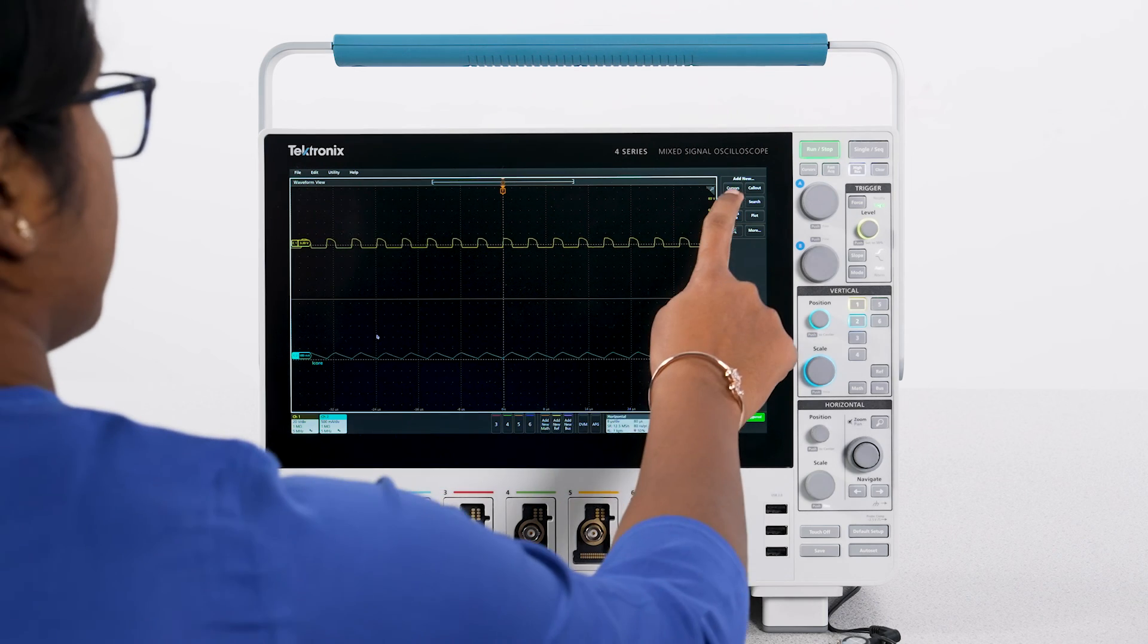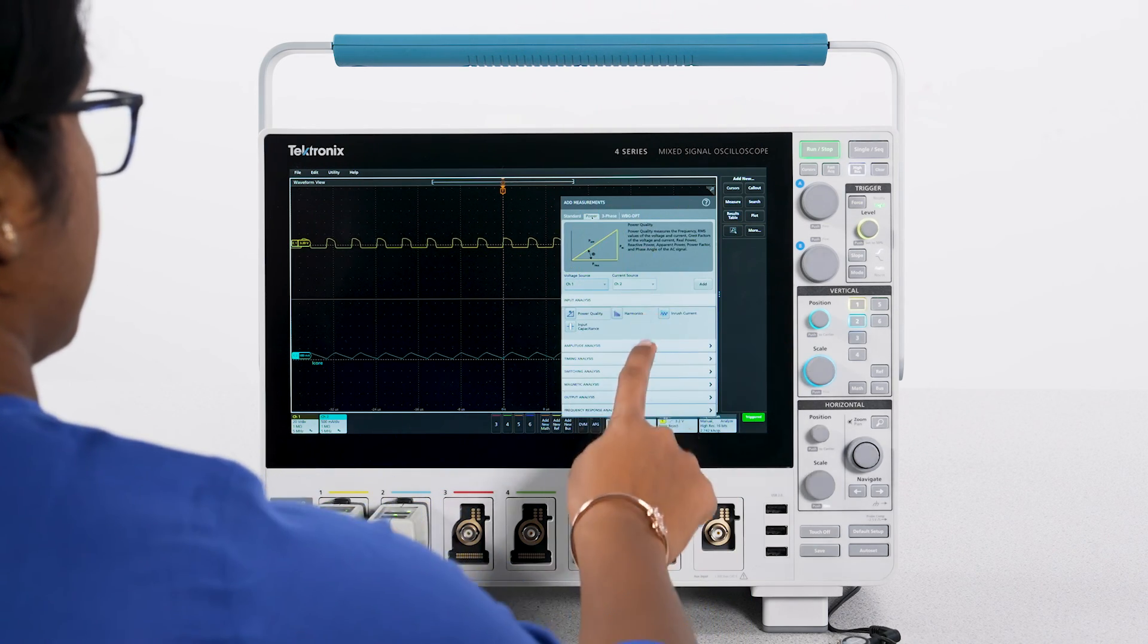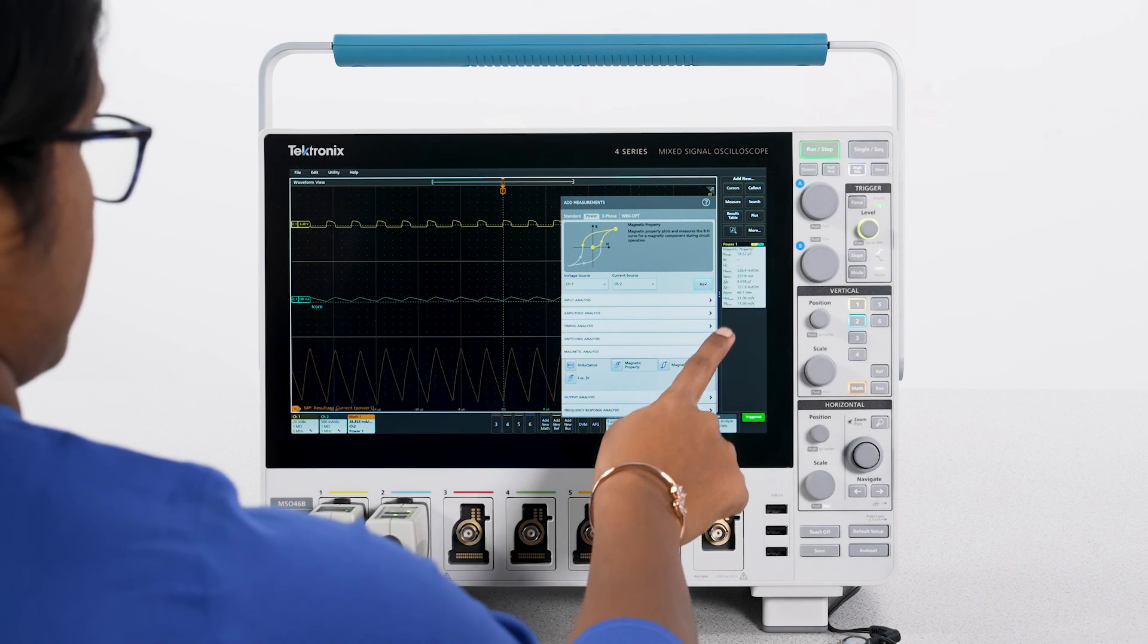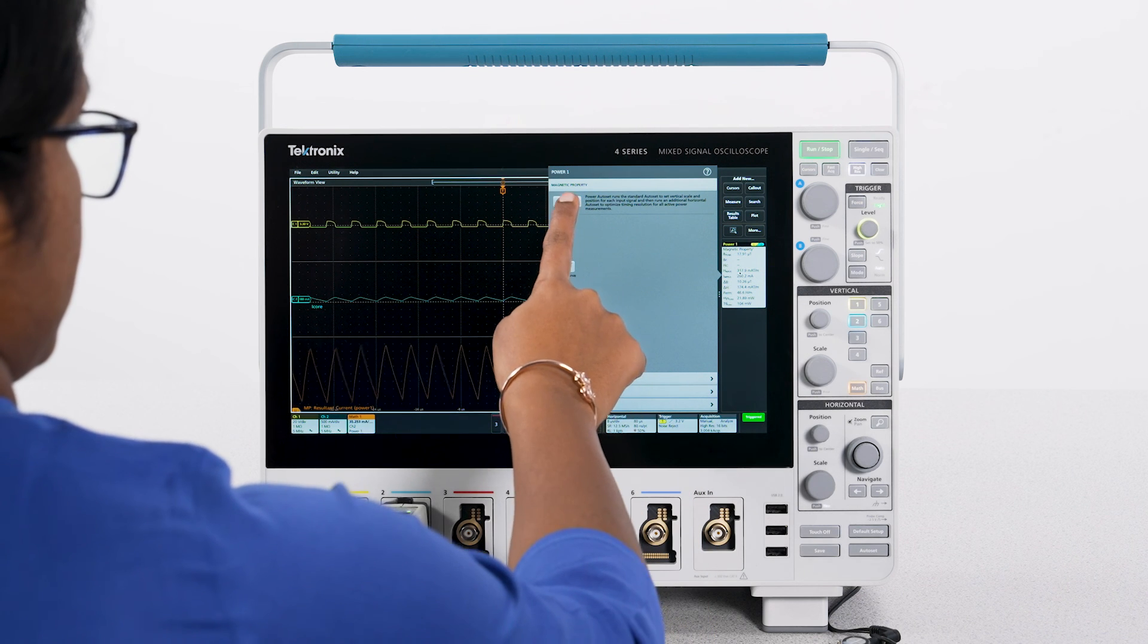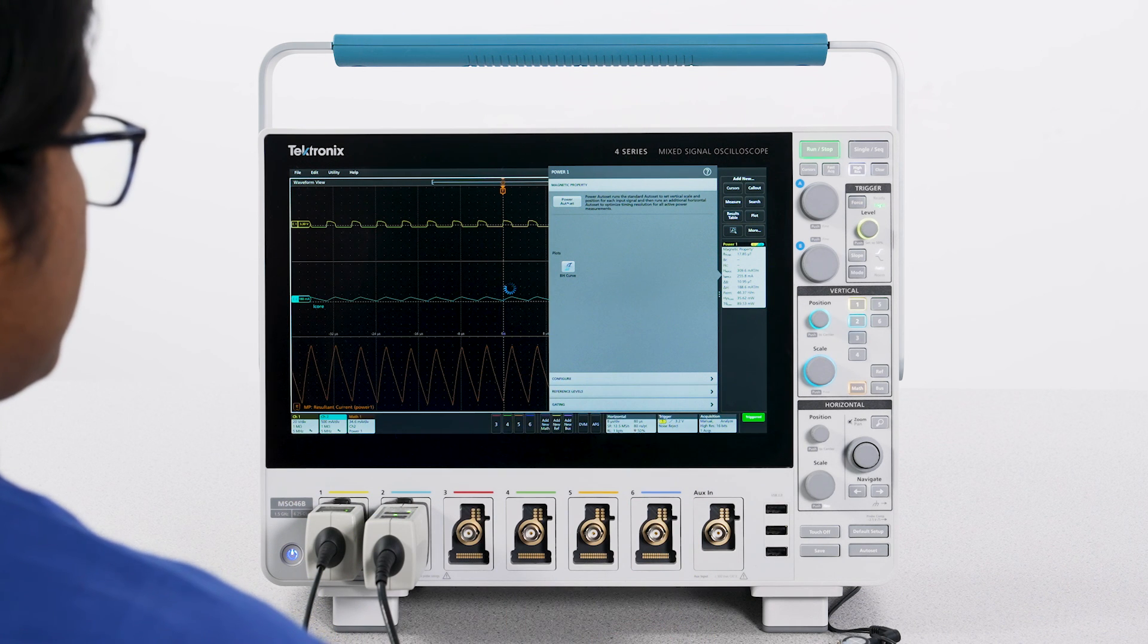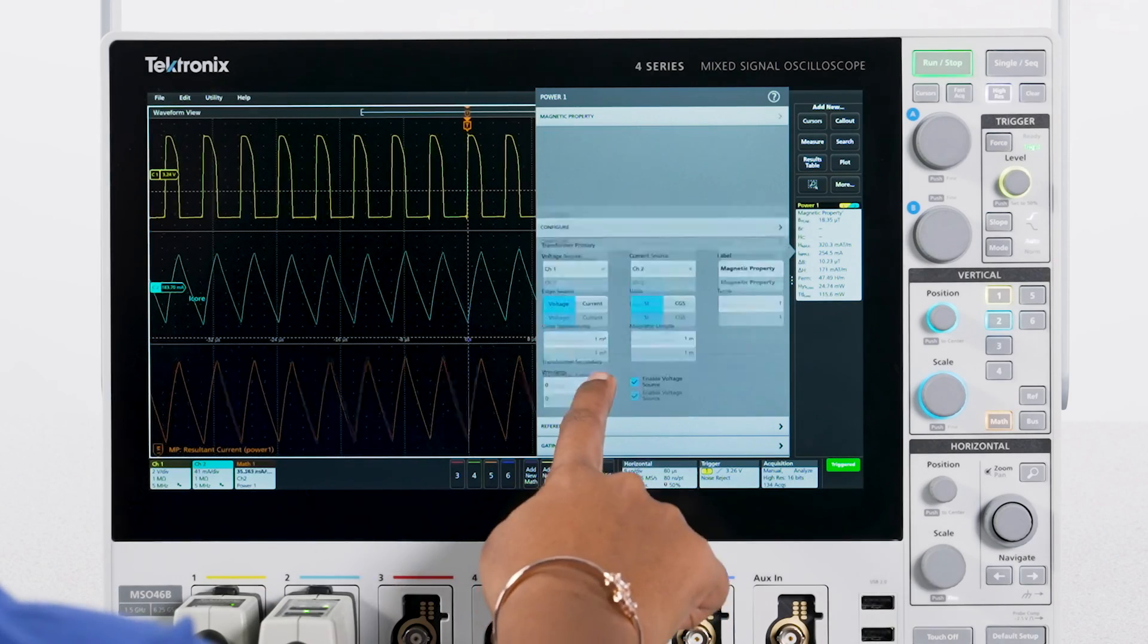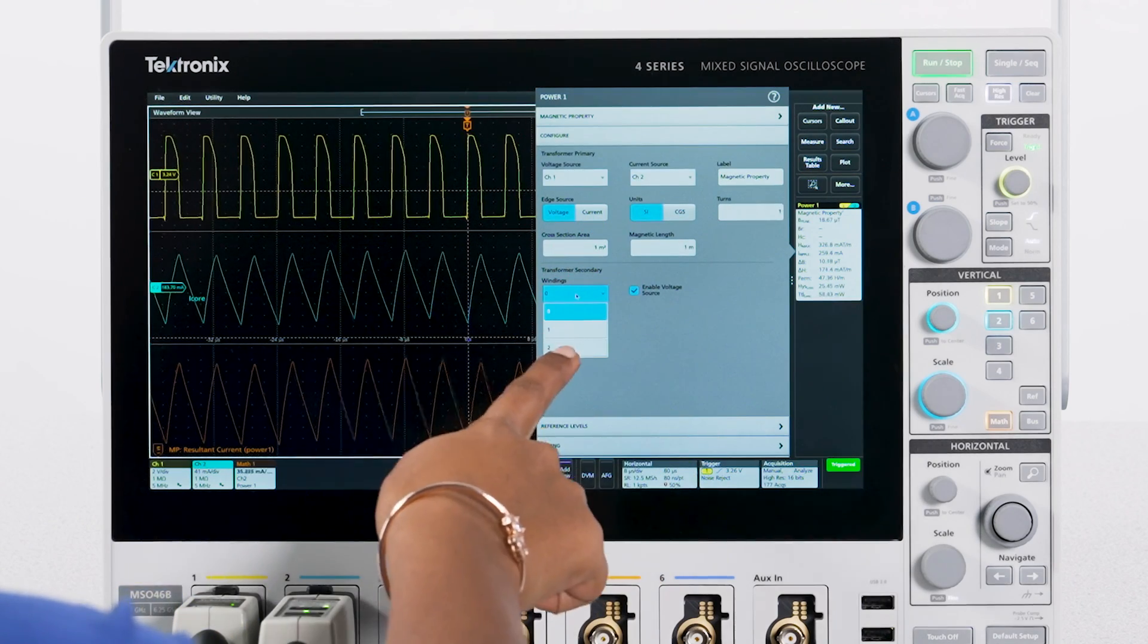The magnetic property measurement uses voltage and current to compute magnetic flux density, magnetic field intensity strength, and various loss components including hysteresis loss and total loss. The measurement also supports multiple transformer secondaries based on the scope channel count.